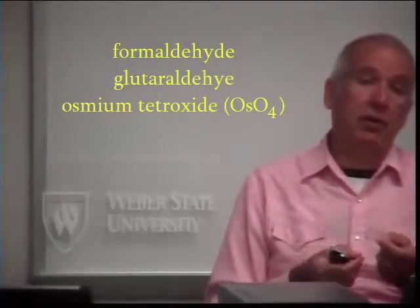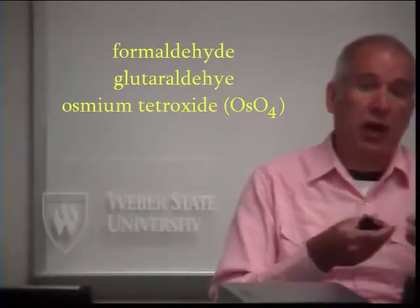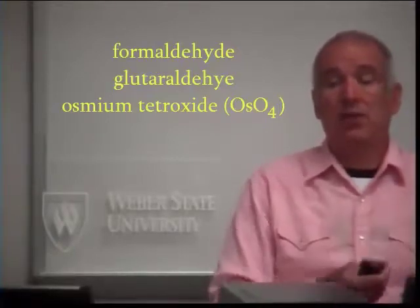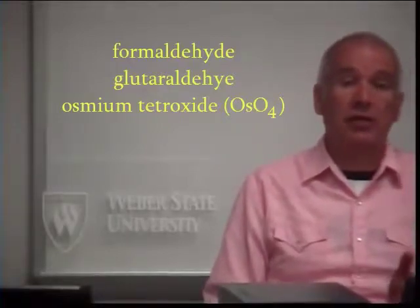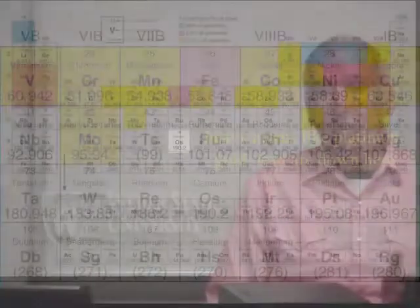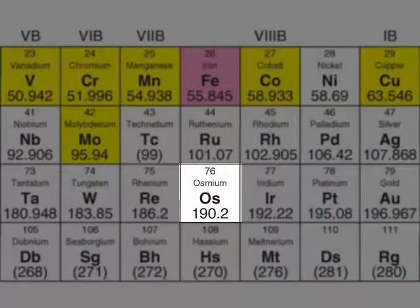Another fixative special to electron microscopy, not used for clinical biopsies, is osmium tetroxide (OsO4). Osmium is a very, very large atom on the periodic table, and this large size gives it a lot of stopping ability when things are fired at it. In electron microscopy, the projectiles fired at the tissue are electrons — we take electrons, put them in a high voltage field, and accelerate them.